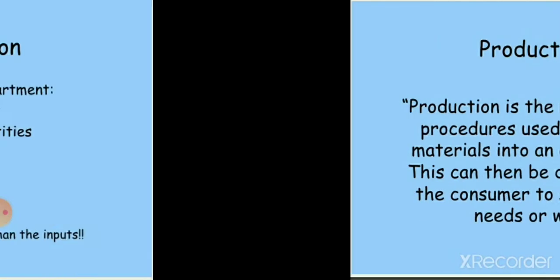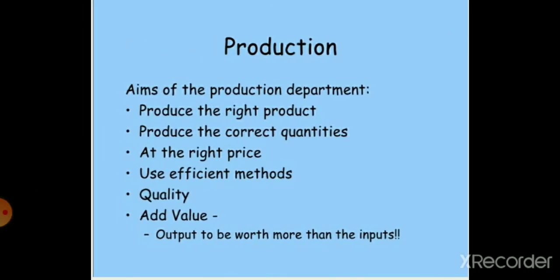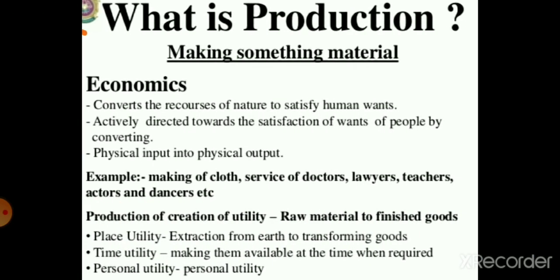The aims of the production department are: produce the right product, produce the correct quantities, at the right price, use efficient methods for production, ensure quality production, and add value so that output is worth more than the inputs.